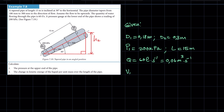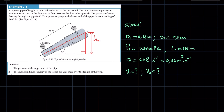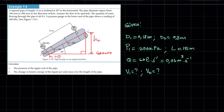We do not have v1 and we do not have v2. h1 we take as being equal to zero — we always take the lower end of the pipe as being on the ground, so the ground is our frame of reference, meaning h1 is equal to zero. We also do not have p2.